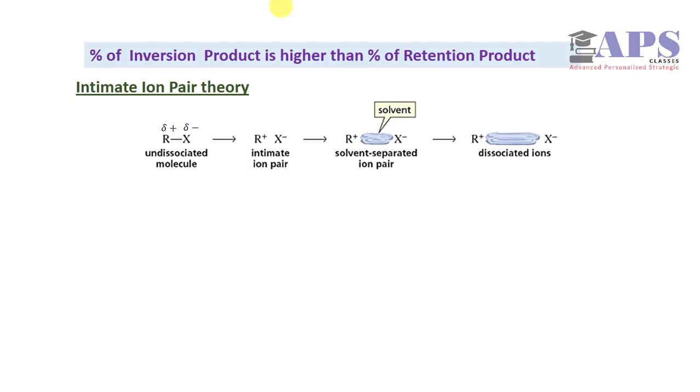In SN1 reaction, polar protic solvent is used. Carbon-halogen bond is polar covalent in nature. Due to difference in electronegativity, there will be a delta positive charge on carbon and delta negative charge on halogen. Polar protic solvent will facilitate this charge separation and finally it will become R+ and X-.